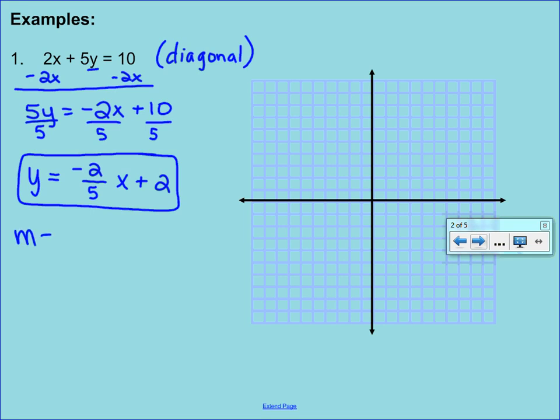Our m, or our slope, is the number that is associated with our x. So we know that our slope is a negative 2 over 5. Our y-intercept, or our b-value, is going to be a 2. We don't want to write it as a 2. You want to write it as an ordered pair, so a 0 and a 2.